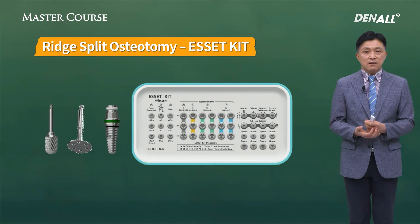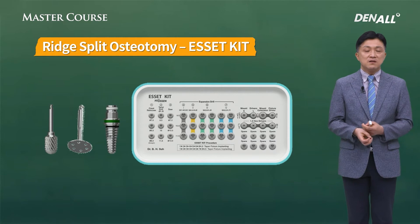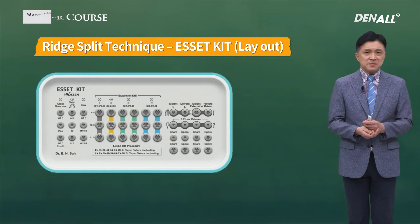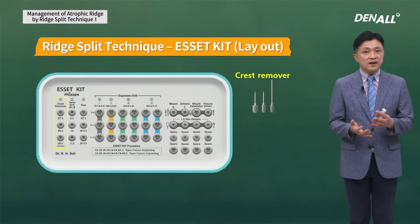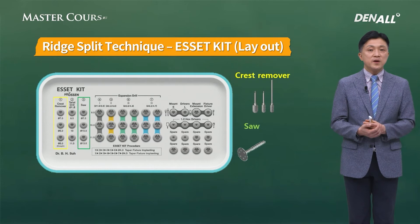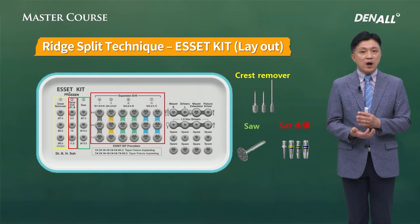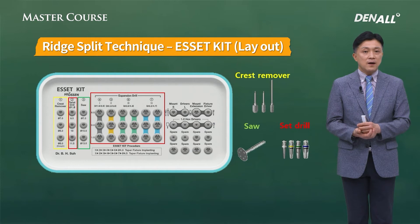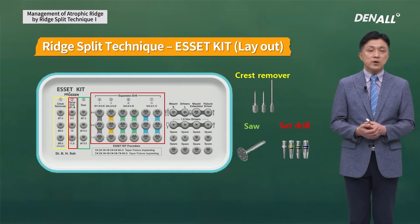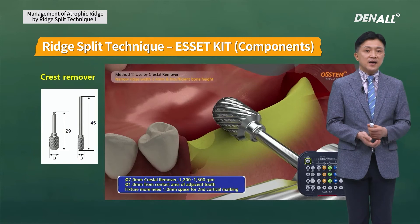The asset kit is shown here — a newer version, which is the only version currently being sold. There are three main components: the crest remover for alveoloplasty, the saw for osteotomy, and the set drill for splitting the ridge. First, alveoloplasty is done using the crest remover; the saw is used for creating osteotomy; and the set drill splits the ridge.